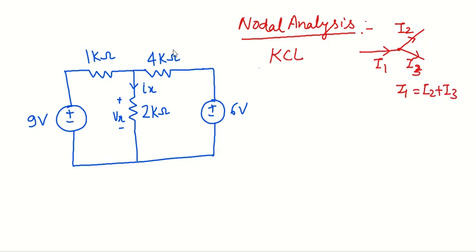Similarly, whenever we are applying node analysis at a particular node, first see the given circuit. Here we have to assume one grounded node. So if we assume this potential is grounded, it will be at zero potential.